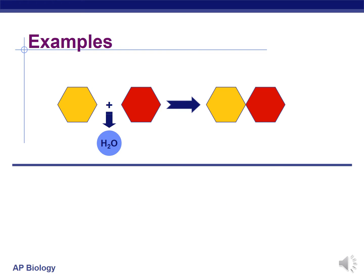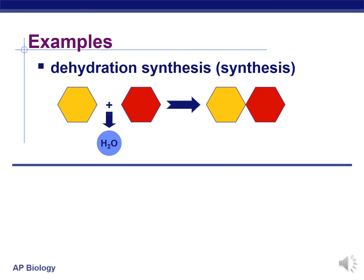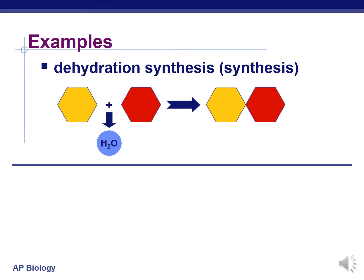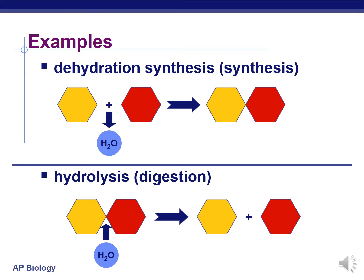Let's look at those prime examples a little closer. Here's dehydration synthesis. We're taking two glucose molecules and we're going to glue them together by removing a water molecule from between the two of them. And hydrolysis involves just the opposite — taking that disaccharide, adding water, using the atoms in water — the two hydrogens and the oxygen — to break that disaccharide into two and satisfy the bond requirements for the two new molecules.